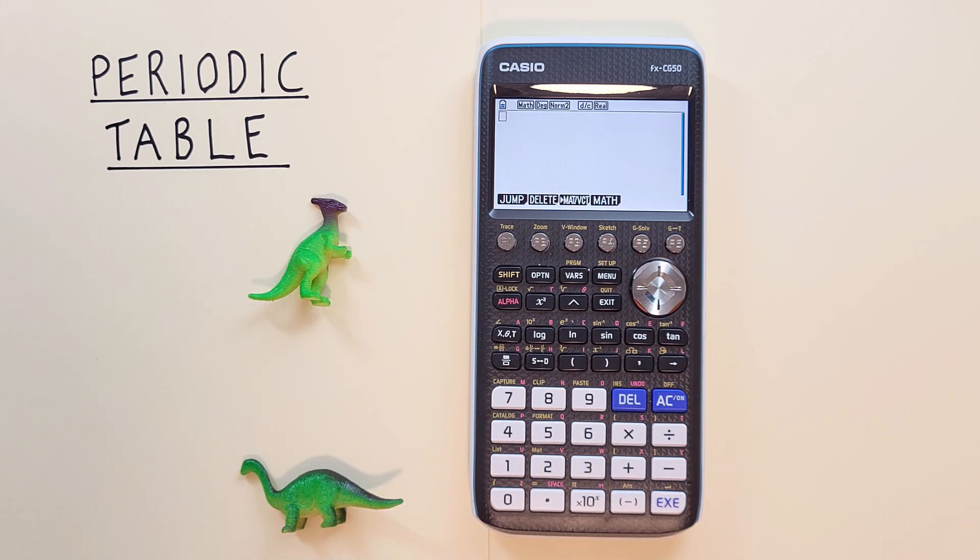Hello and welcome to HD Calcs. I'm Rick and in this video we're going to have a look at how we can find and use the periodic table of elements app on the Casio FX CG50 graphing calculator. This is a fantastic tool for chemistry students or anyone working with elements.